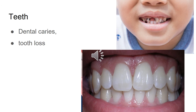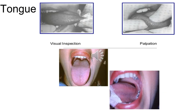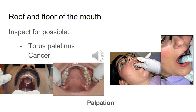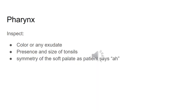Observe the teeth for dental caries or tooth loss. Observe the tongue by asking the patient to touch the tip of their tongue to the roof of their mouth, and inspect the ventral surface. Have the patient protrude their tongue straight out and inspect for deviation, color, texture, or masses. For the roof of the mouth, inspect for possible torus palatinus — a bony growth — and also inspect for cancer. For the pharynx, inspect the color, any exudate, presence and size of tonsils, and the symmetry of the soft palate as the patient says 'ah.'